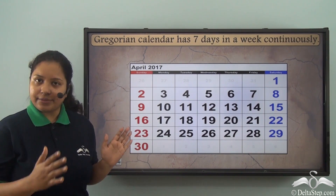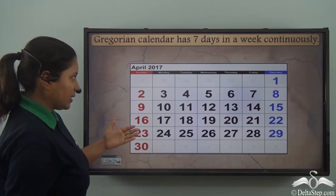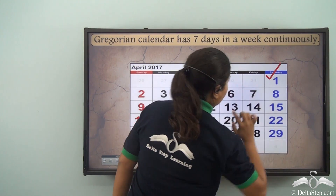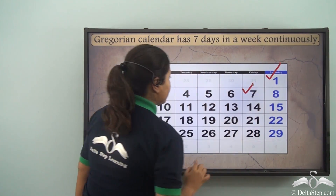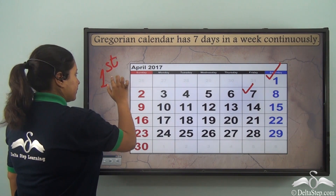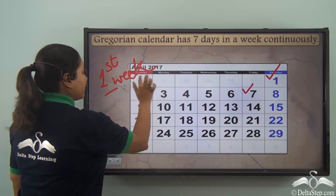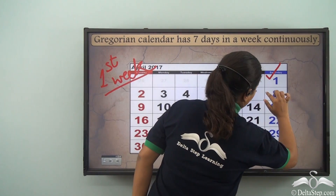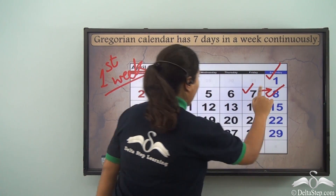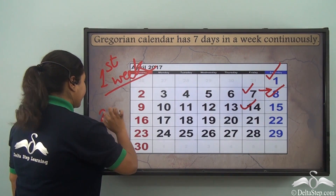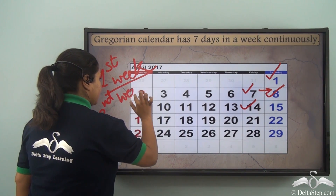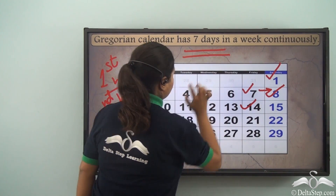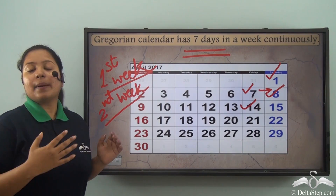Another important thing you will find in the Gregorian calendar is there is a stretch of 7 days which make 1 week continuously. We can see that the month starts from the 1st. From the 1st to the 7th is the 1st week which has got 7 days. After that we see the 8th continuing after the 7th, and from 8th to 14th we get the 2nd week. It is a continuous 7-day stretch that is being followed, and 7 days make 1 week.